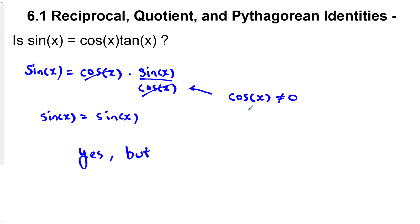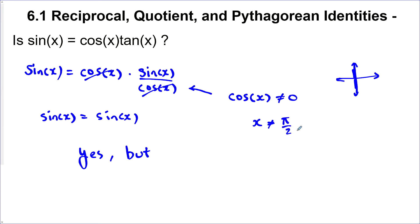When does that happen? Remember, cos is the x value as our points go around a unit circle, and so it would happen here and here. So that means x cannot equal pi over 2, plus pi, any number of pi's going forwards or backwards.